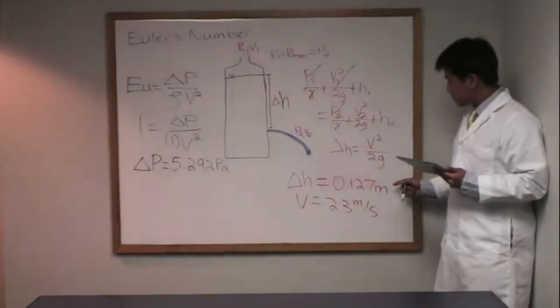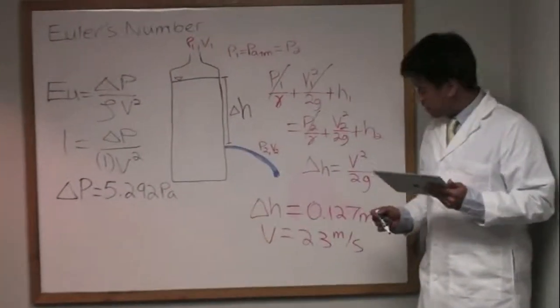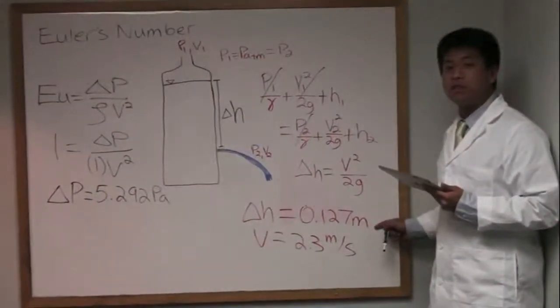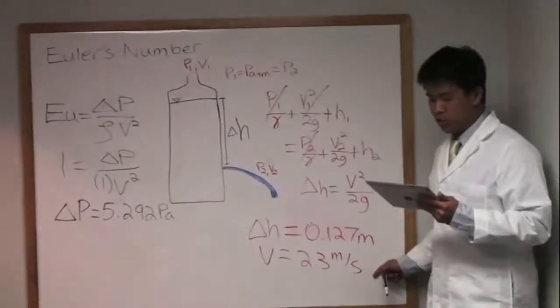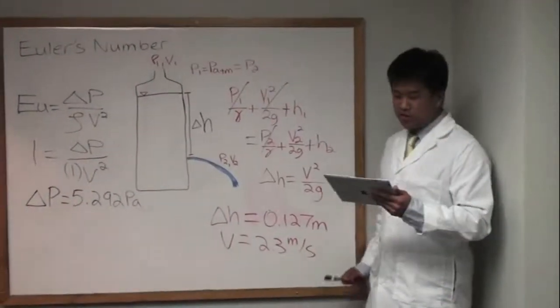we get delta H to equal V squared over 2G. From here we can solve for V. Let's use delta H as 0.127 meters. From there,